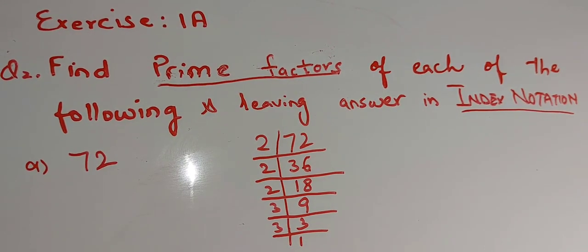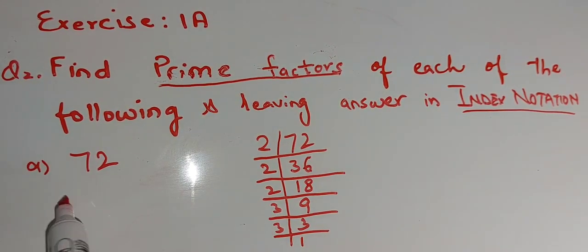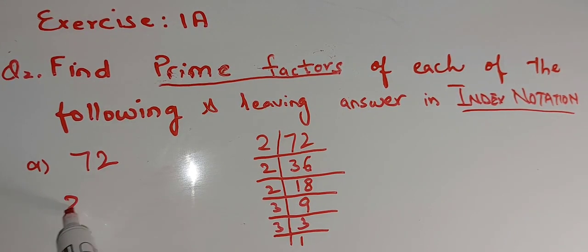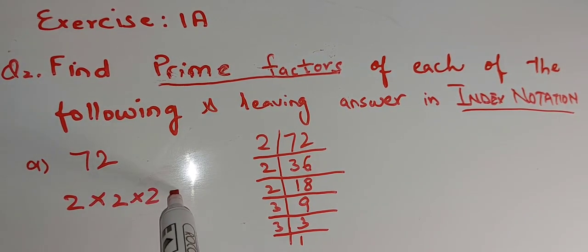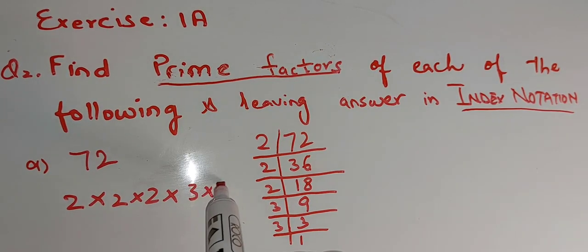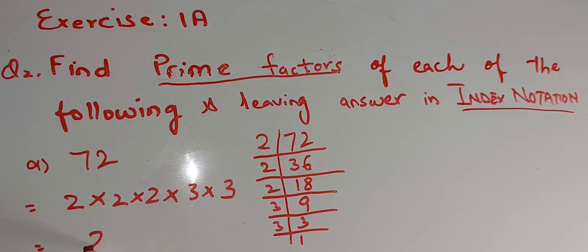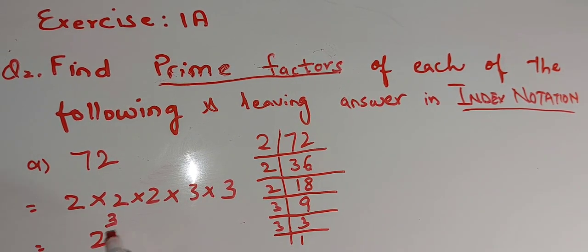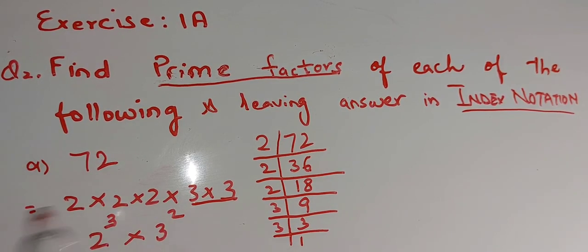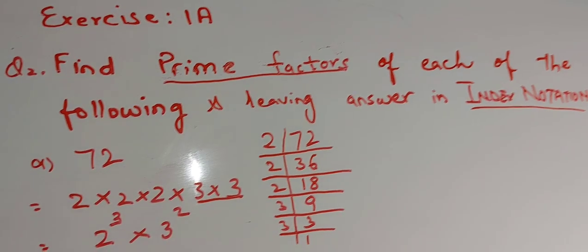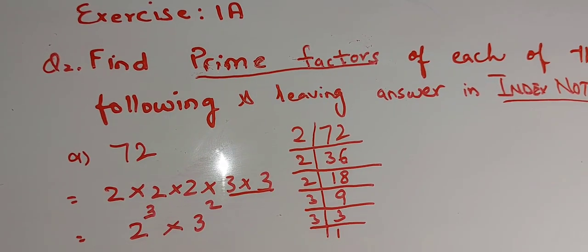These are the prime factors for 72. We write the factors: 2 multiply by 2 multiply by 2 multiply by 3 multiply by 3. When we write the answer in index notation, we count how many 2's there are — 1, 2, 3 — so it becomes 2 to the power 3. And there are two 3's, so the answer becomes 3 to the power 2. This is the answer for part A in index notation form.